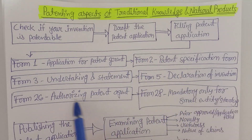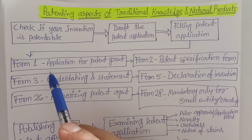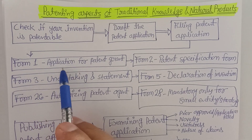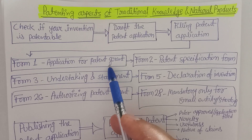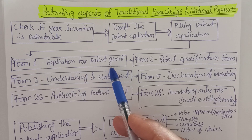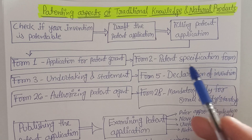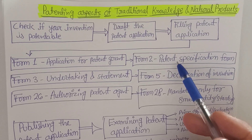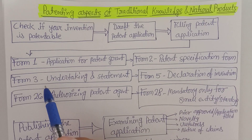Under step three, for filing the patent application, Form number 1 contains information about the application for patent grant — the name of the patent, who is going to file it, and other information. Form number 2 is the patent specification form, where we specify the kind of design patent, method patent, and the proceedings involved.